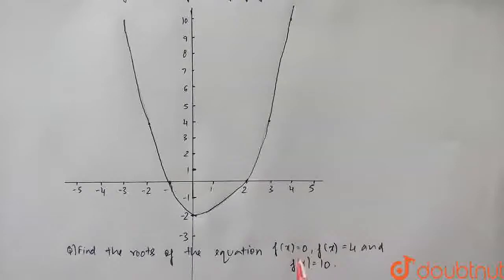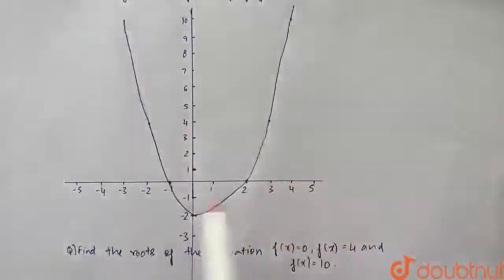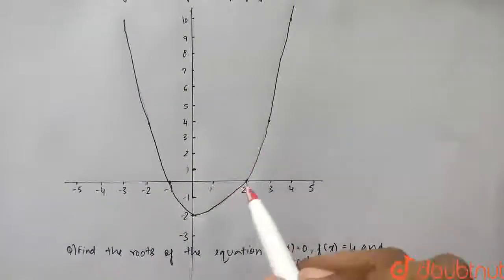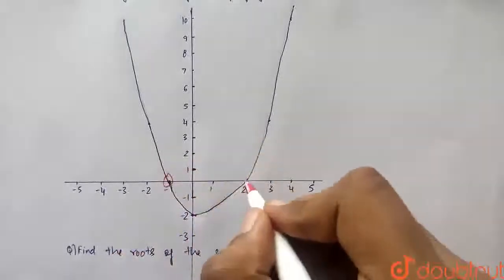Clearly, f of x is equal to 0 is basically the root of the equation when the graph cuts the x-axis. So because only on x-axis, y is equal to 0. So therefore, f of x is equal to 0 is y is equal to 0. Therefore, these are the roots of the equation when it cuts x-axis.